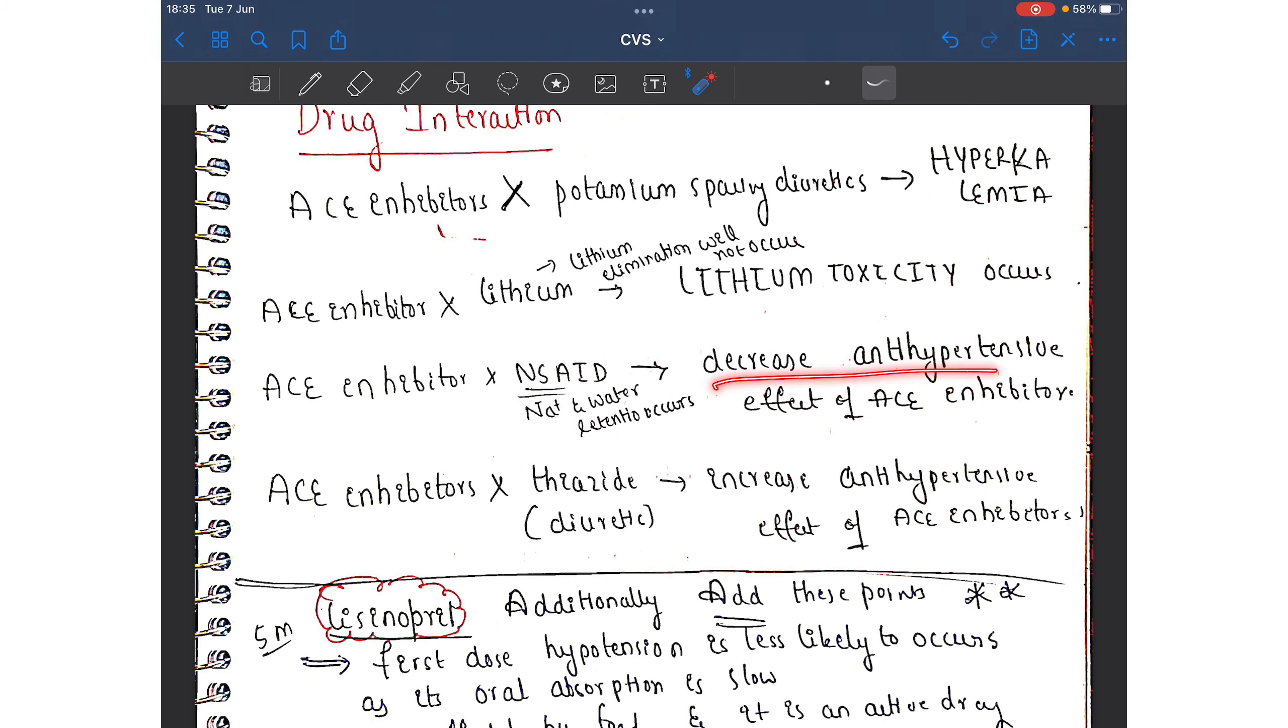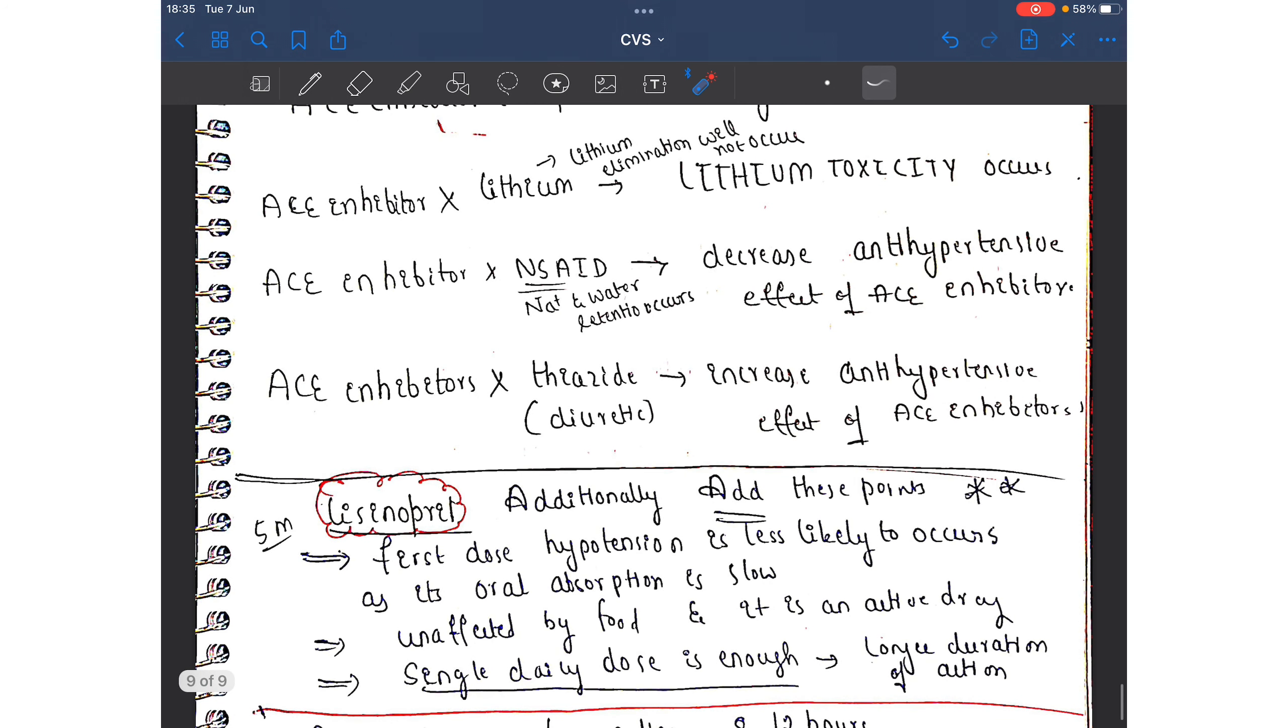What is the net result? If sodium and water retention is occurring, the antihypertensive effect of ACE inhibitors is decreased. The main effect of ACE inhibitors is preventing the rise in blood volume. But if you are giving along with NSAIDs, sodium and water retention is actually occurring. Next, when ACE inhibitors are given along with thiazide diuretics, there is increased antihypertensive effect.